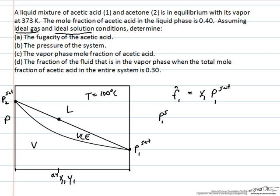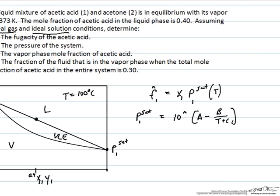If we want to know the saturation pressure, we know this is a function of temperature only, and we already know the temperature, which is 100 degrees C. Then we can use an Antoine relationship, so 10 raised to the power of the quantity A minus B over T plus C.